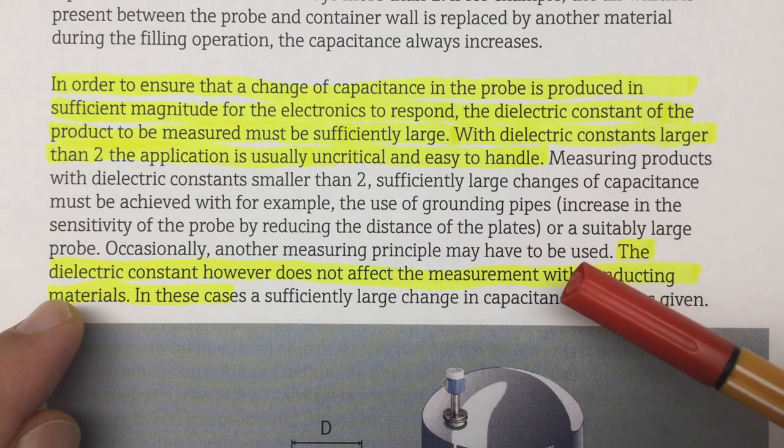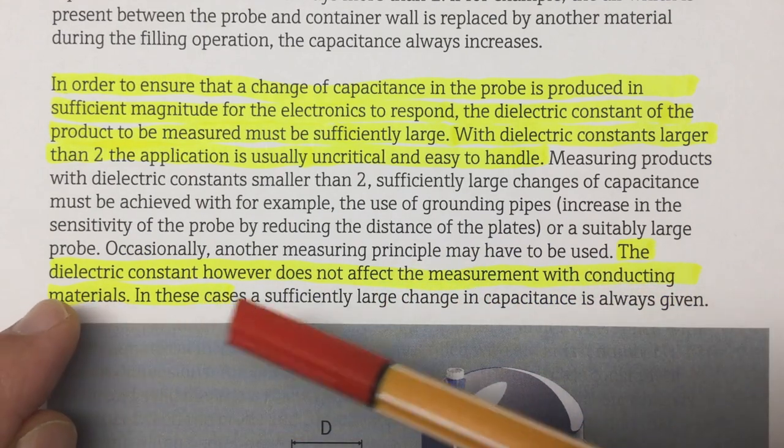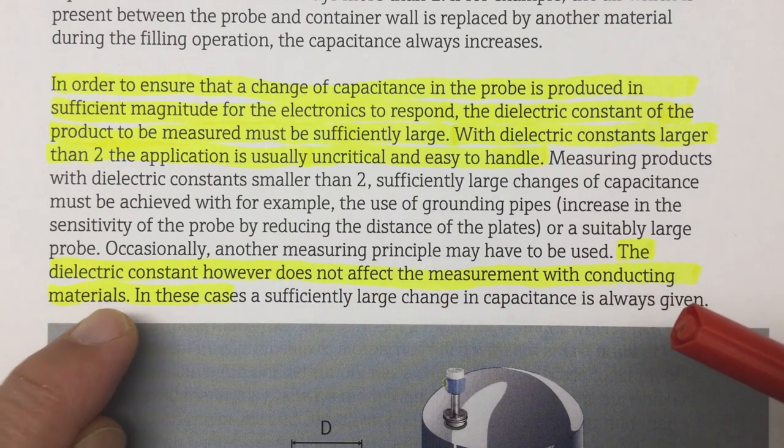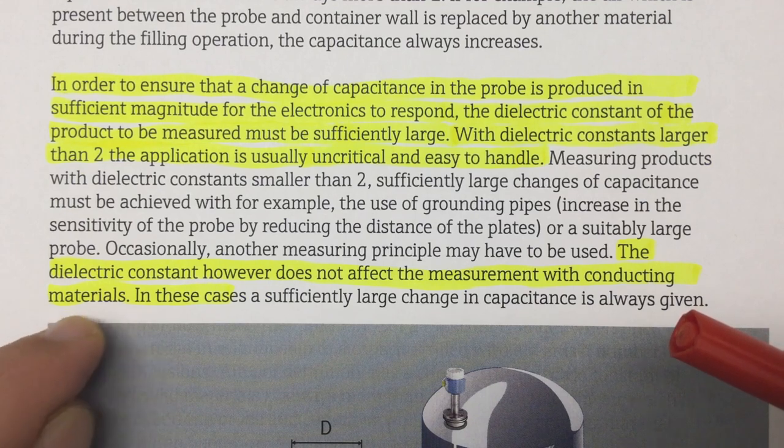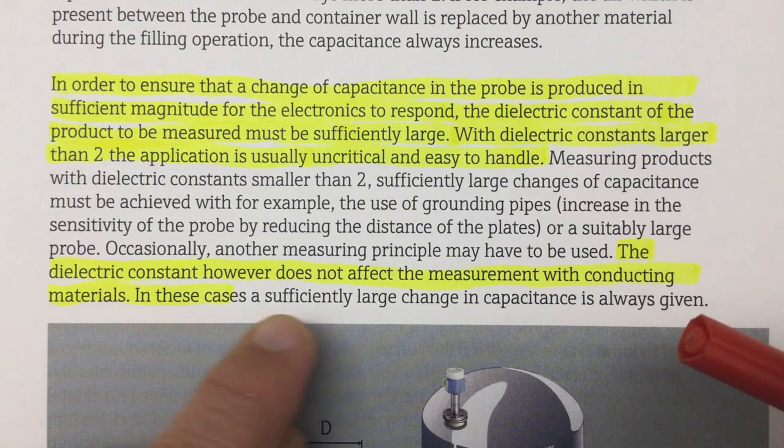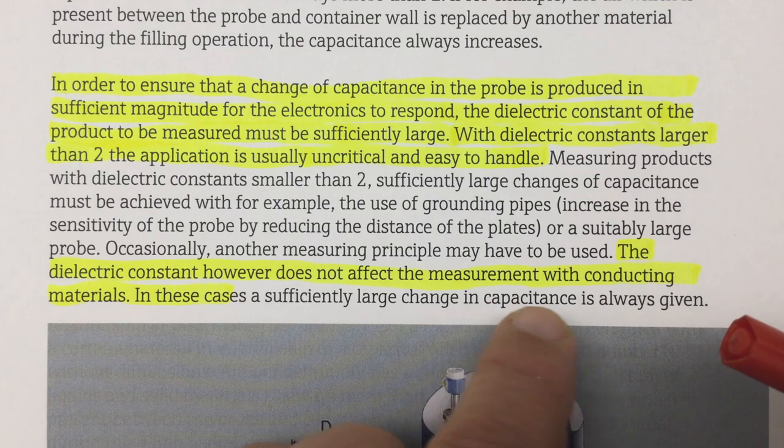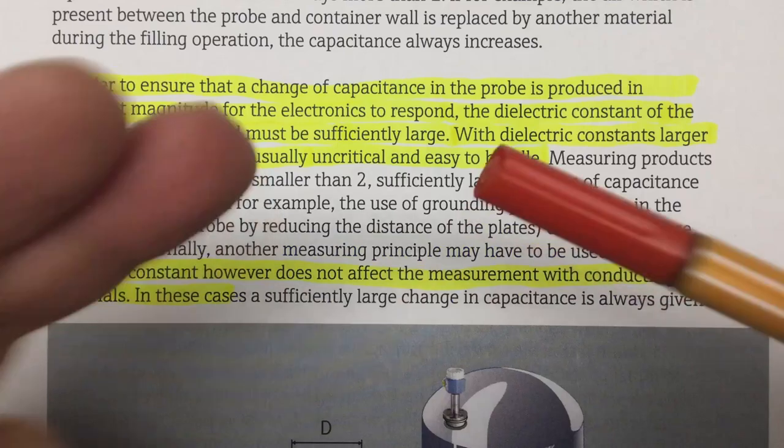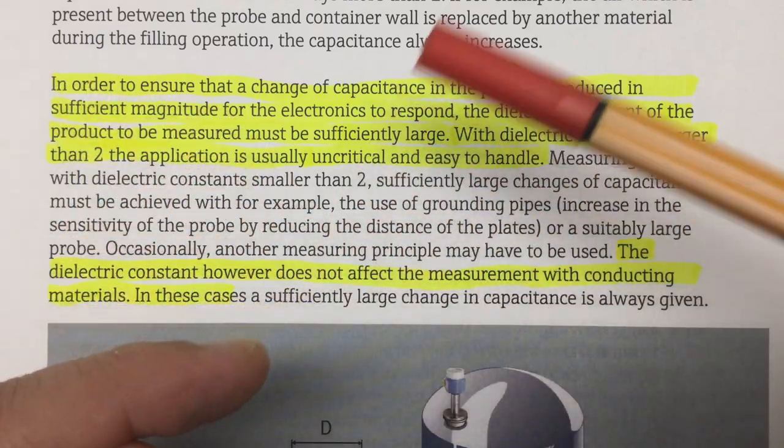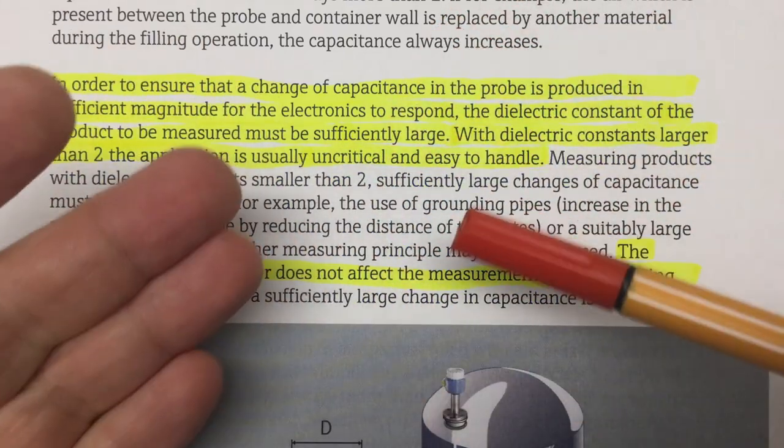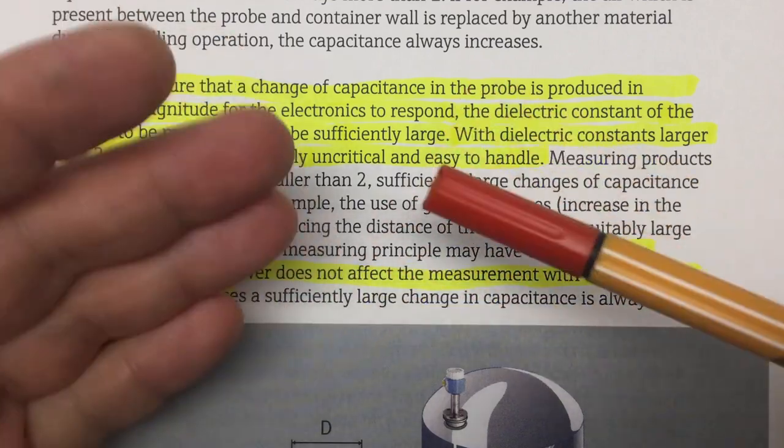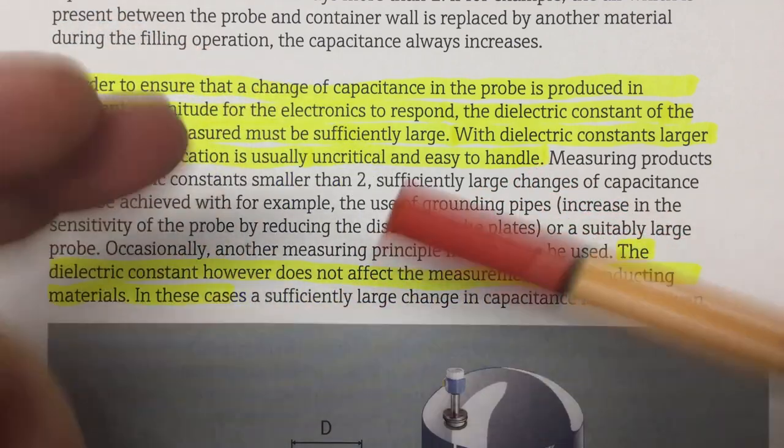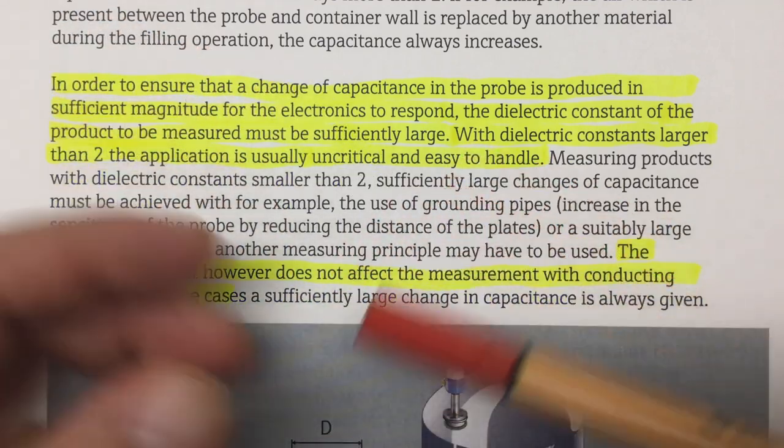So we are talking here about the dielectric constant of our liquid and how it influences the measurement. And it needs to be sufficiently large, larger than air. And they say for their sensors, it's 2 is the limit. But then further down, there's a single sentence. The dielectric constant, however, does not affect the measurement with conducting materials, that is fluids. In this case, a sufficiently large change in capacitance is always given. And we saw with water, saline, alcohol, we always get, because it's a metal sheath analog, you always get a large increase in capacitance.